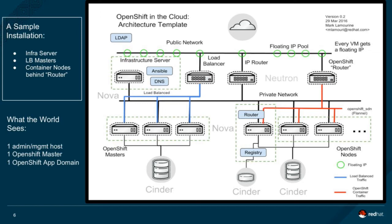The nodes themselves can scale out horizontally, and I'll talk about how that's automated in a minute. The important part is there are really two views of this: the world's view, which is three IP addresses — two sort of public and one for administrators of the service. Users don't see all of this; we see it, and we have to make it all work together and hide the minutia from them.